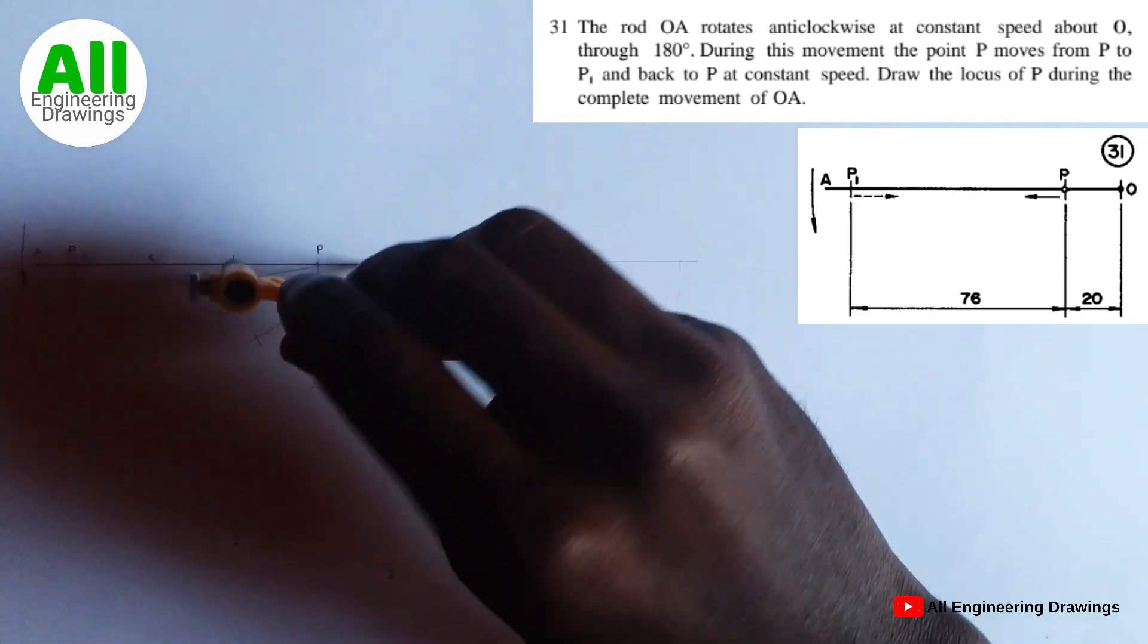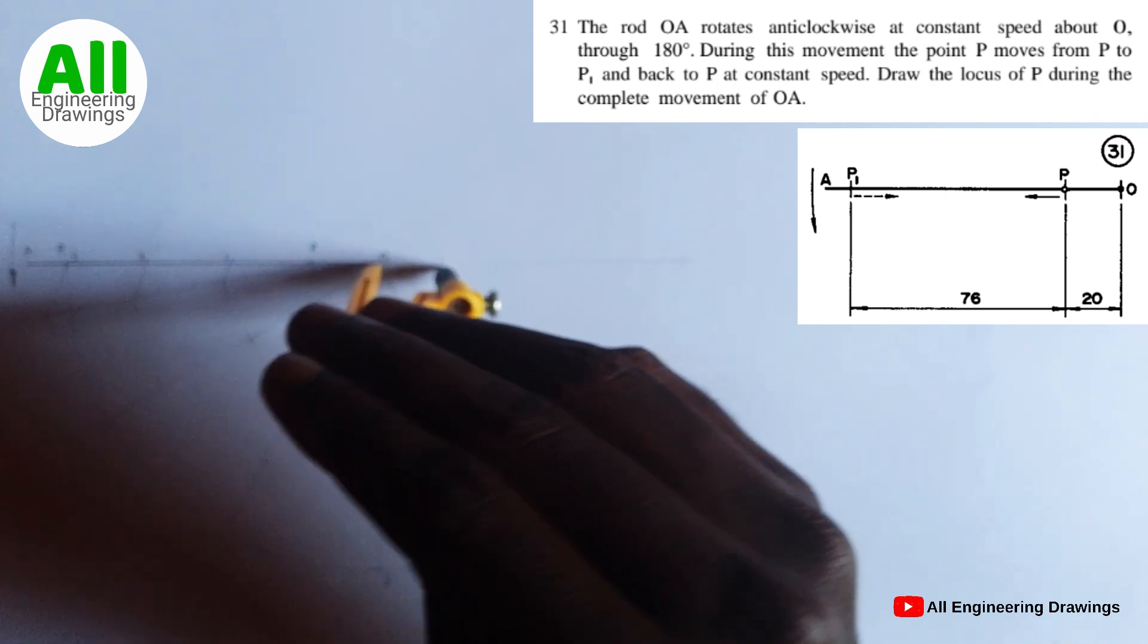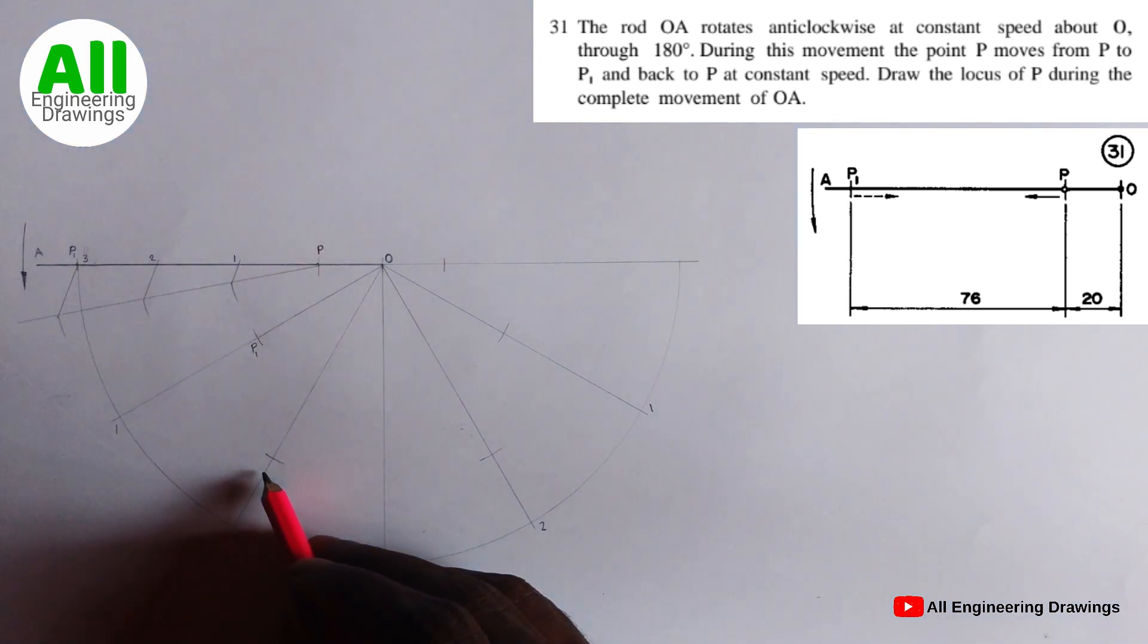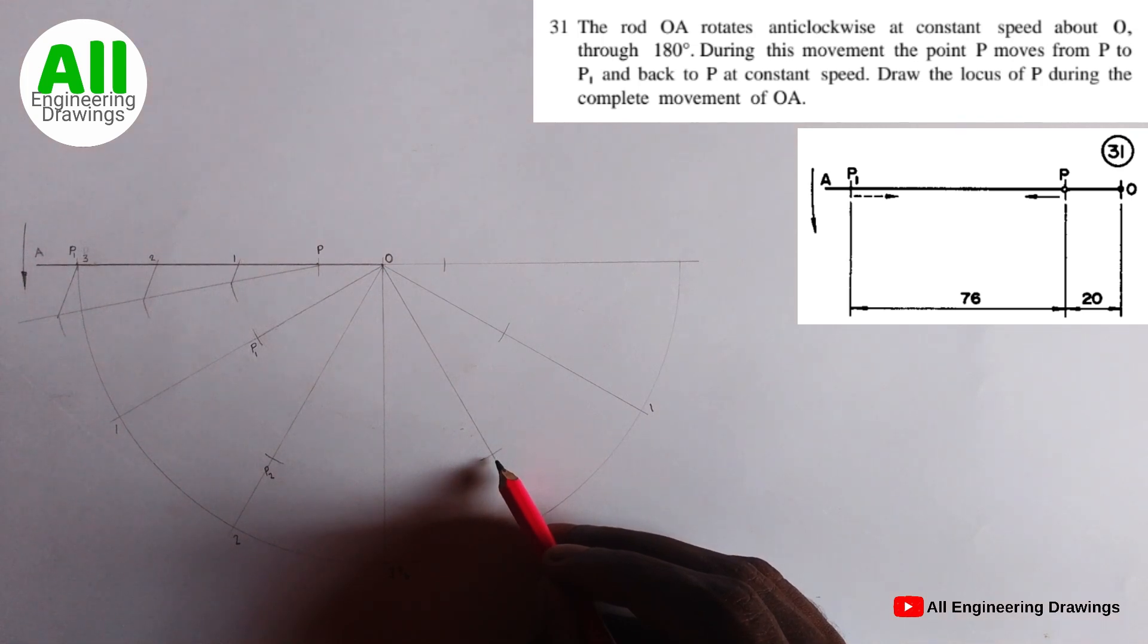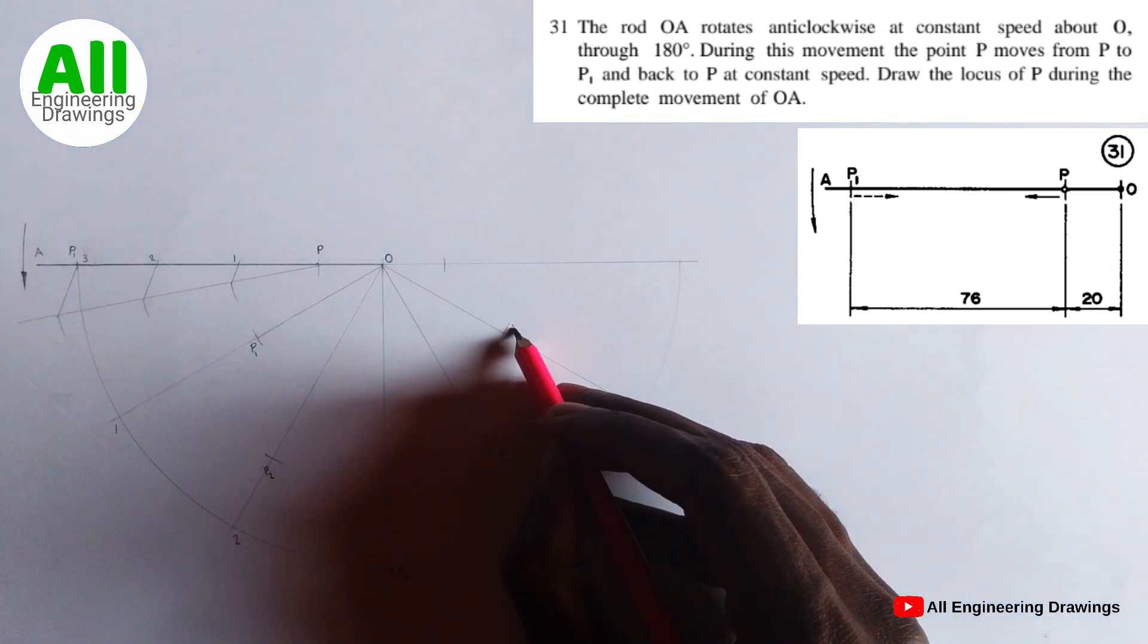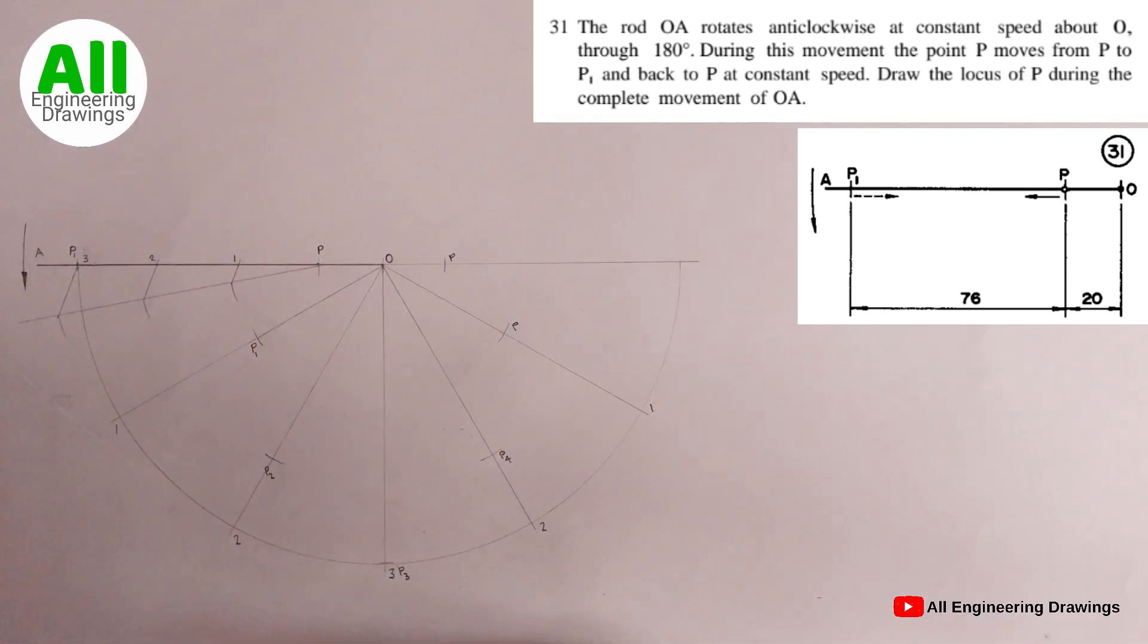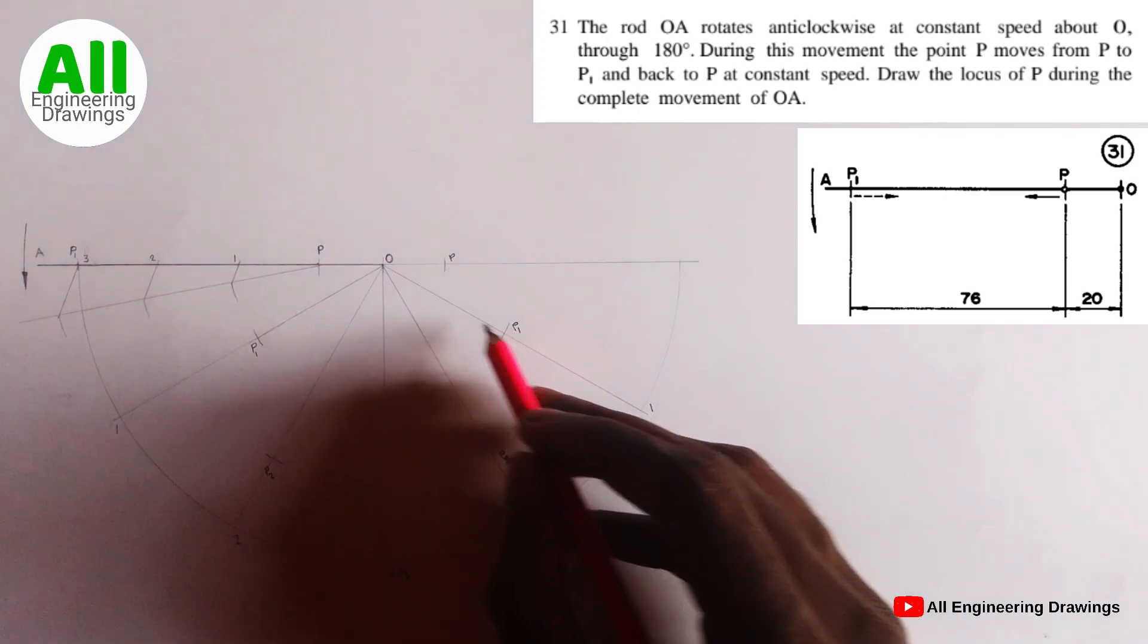Also adjust your compass to point P. So cut an arc on the extended line here. So after cutting the arc, number the point where arcs cut through the line this way. So I will call this point P, this point here P1, this point P2, here P3. This point here should be called P2, and this point here, so this point here should be called P2, this point here P1 and this point P.